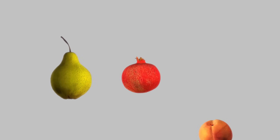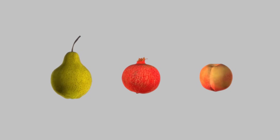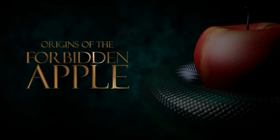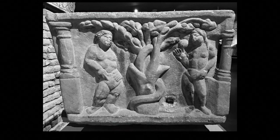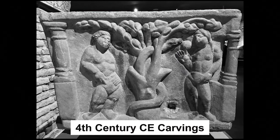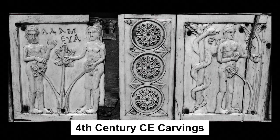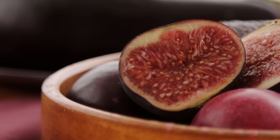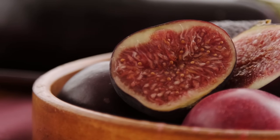Even in Latin, malum could actually refer to any fleshy fruit with a skin, such as a pear, a pomegranate, or a peach. So we need to look elsewhere for the origins of the forbidden apple. Our earliest sources are Christian carvings and illustrations on catacombs and sarcophagi from the fourth century CE, which mostly depict the fruit as a fig.